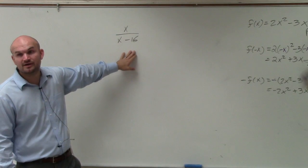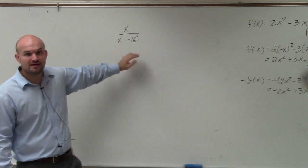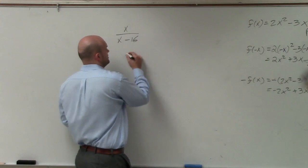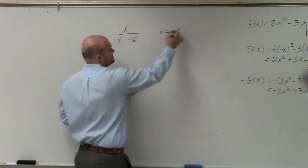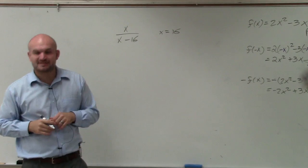So the values that make the denominator equal to zero would be 16. So the answer is just x equals 16. That is when the function is not defined.